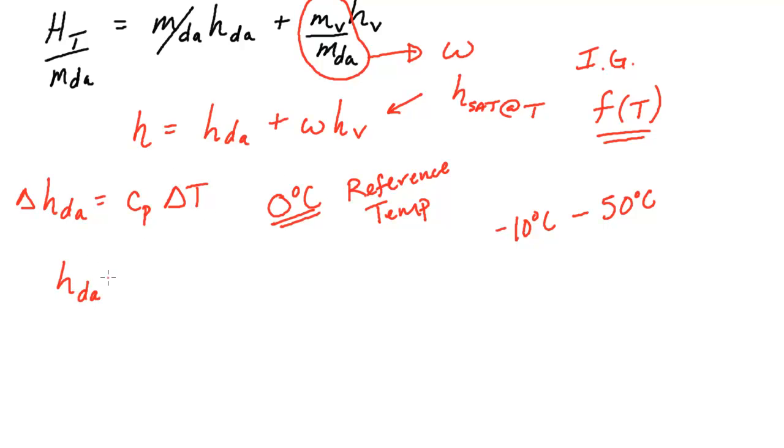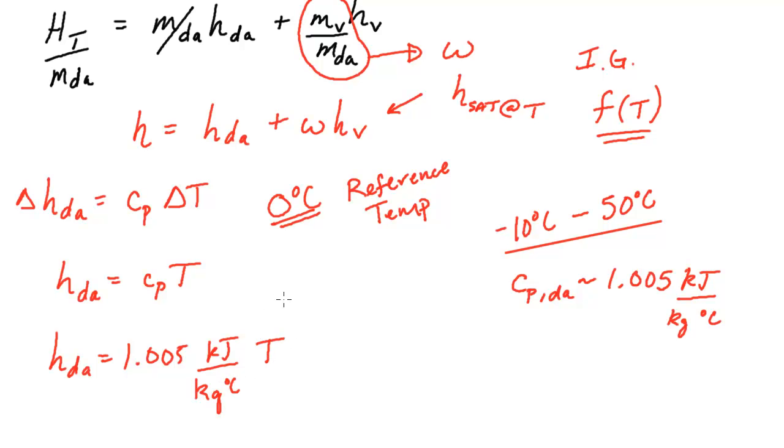So if we take 0 degrees C as a reference temp, we can make this hand-wavy statement that the enthalpy at any given temperature is just this relation. And in this range, the CP for dry air is very close to 1.005 kilojoules per kilogram degree C. And so now we basically have this relation, times C, and this is in degrees C.